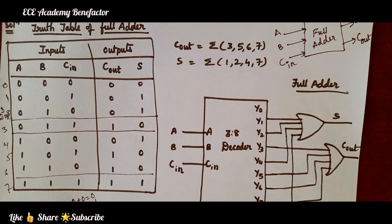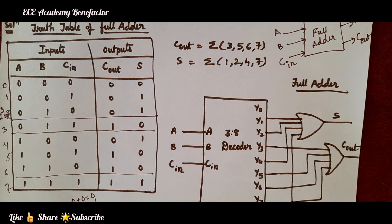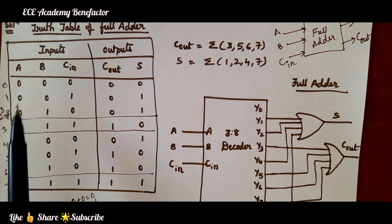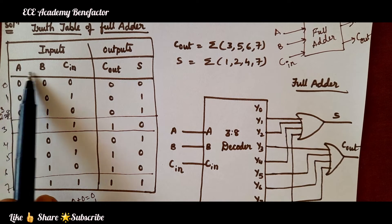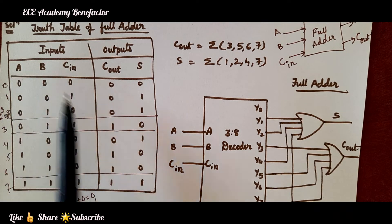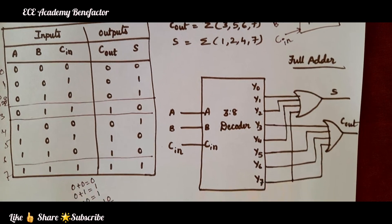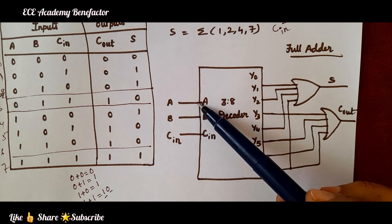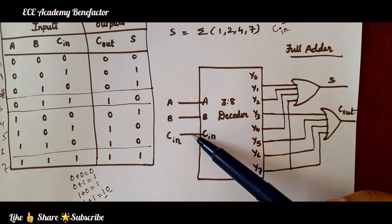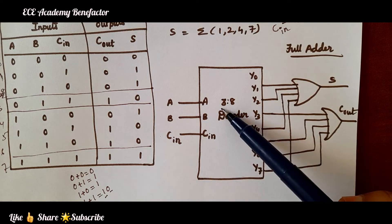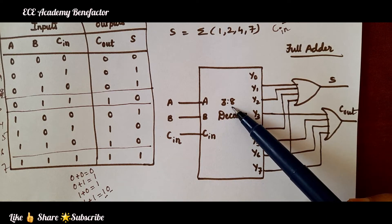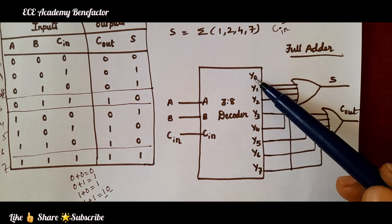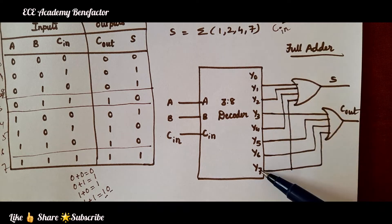We need to use a decoder to implement the full adder. To decide which decoder to use, we look at the number of inputs. Since we have 3 inputs, we must use a 3-to-8 decoder, which has 8 outputs varying from y0 to y7.